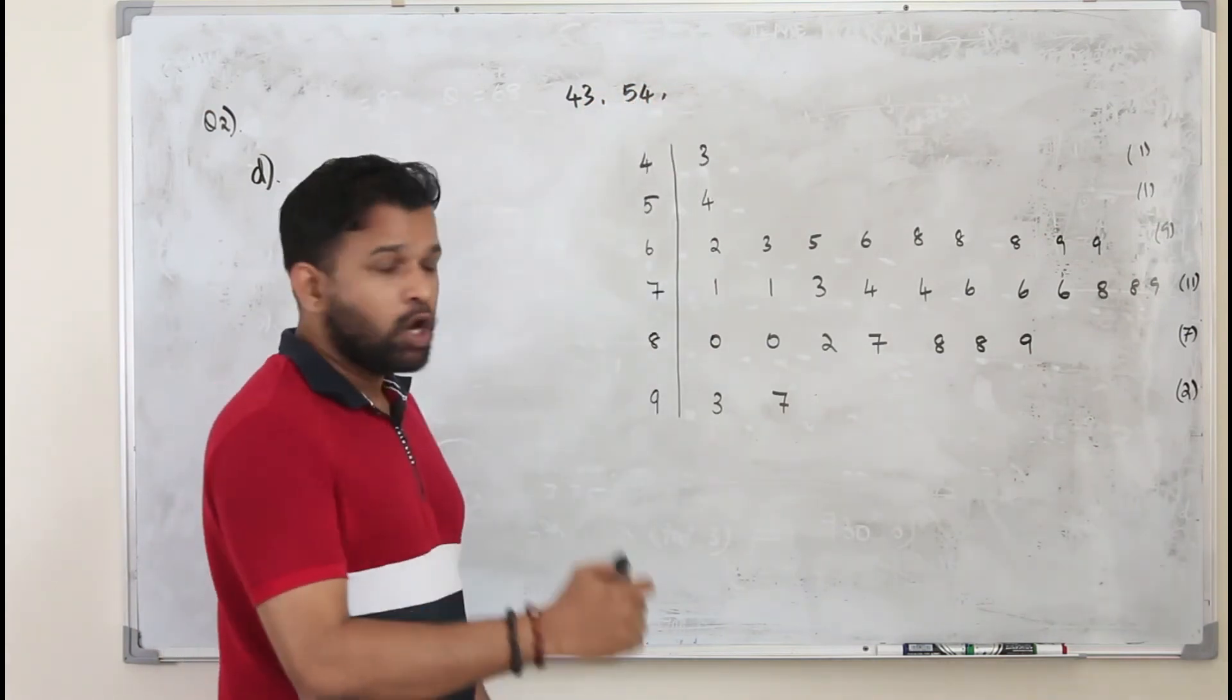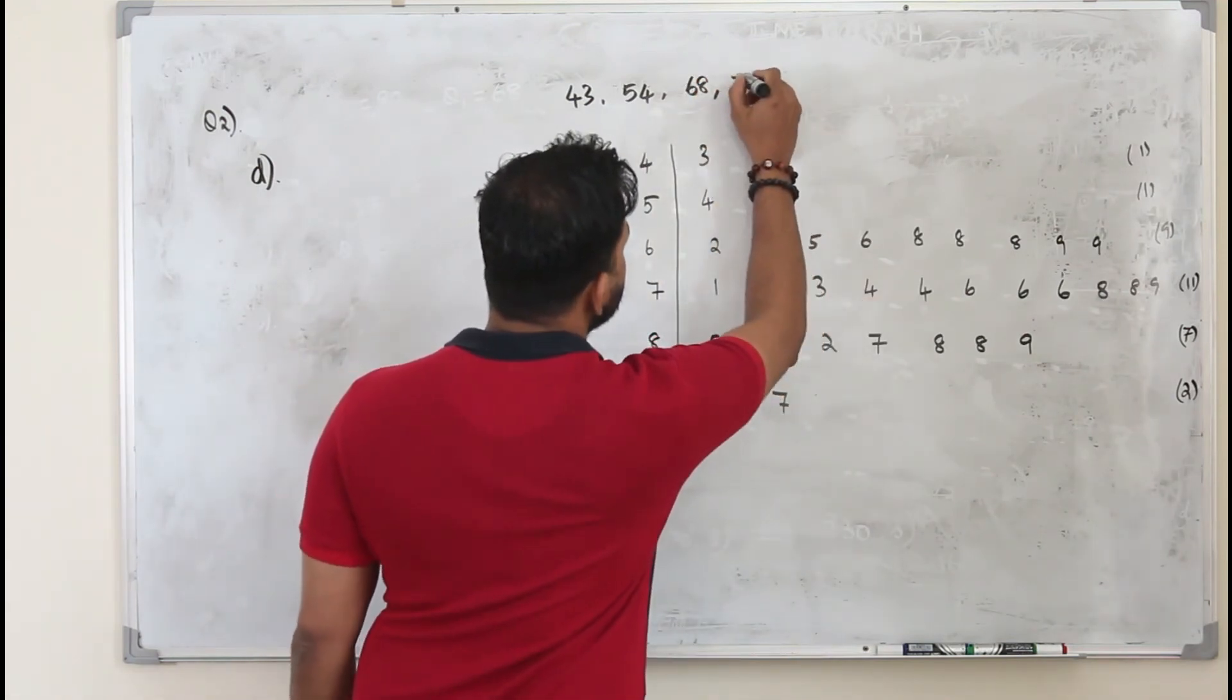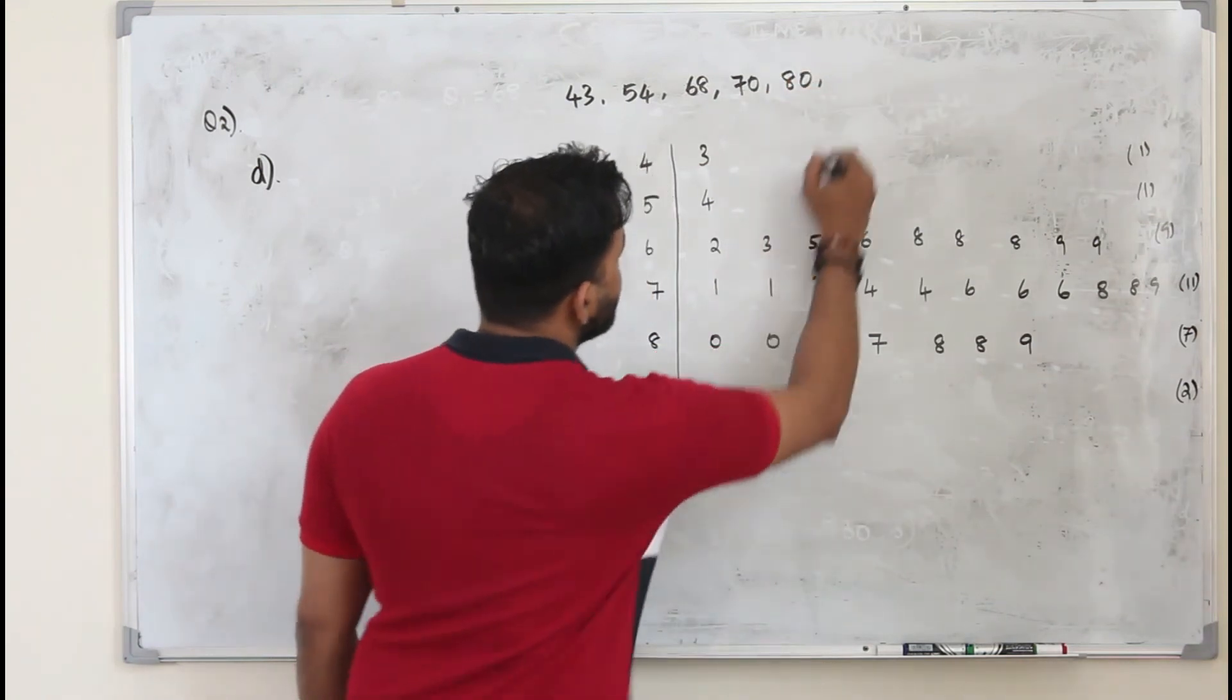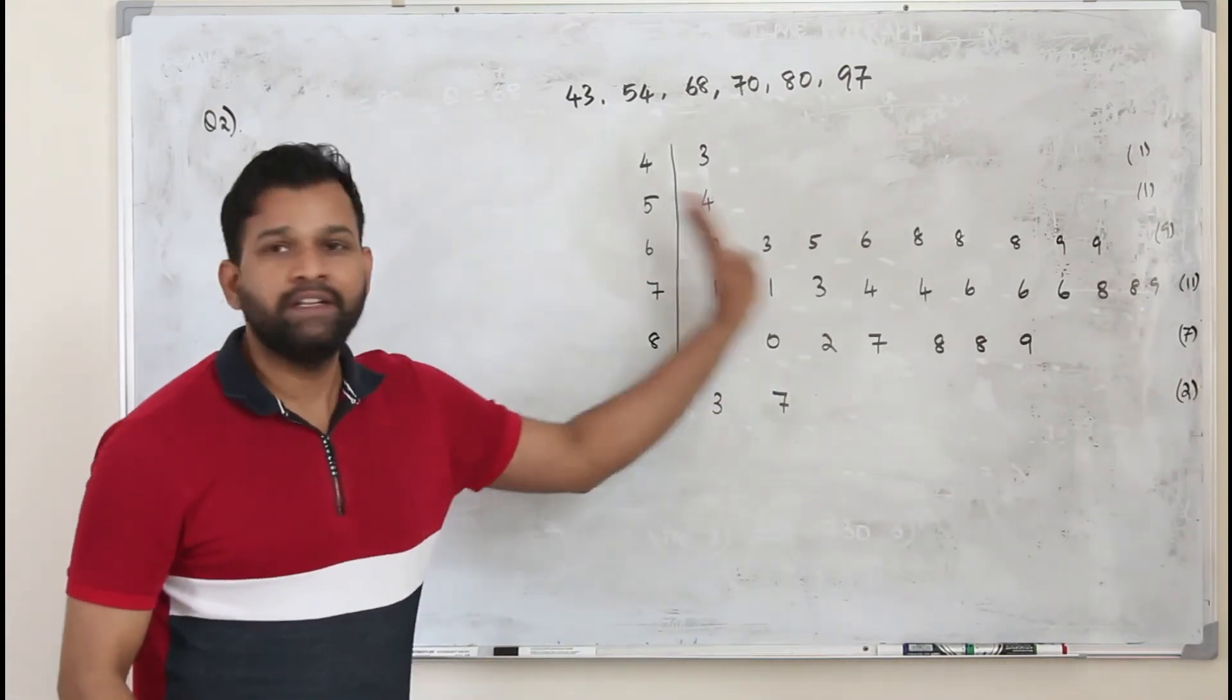And our lower quartile, we have already calculated it, 68. And the median is 74. Upper quartile is 80. And the highest value is 97. We need all these values. We don't need the rest of the values.